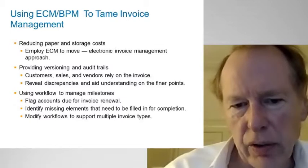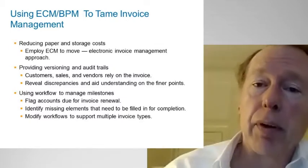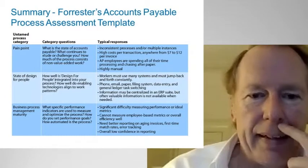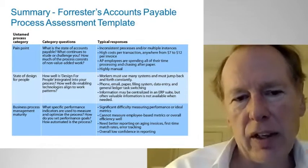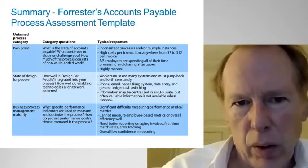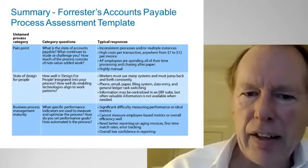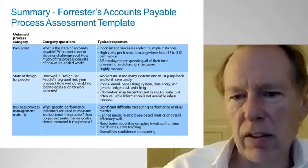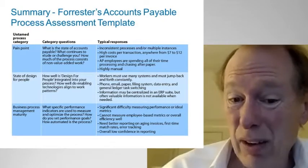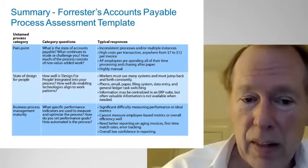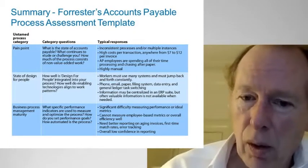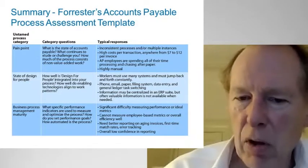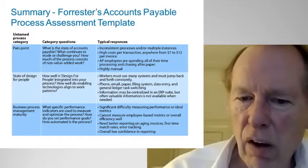Business process management and content management are important. Looking at cases — particularly for scenarios where a process wasn't approved automatically and was kicked to a human — there may be more complexity: a rogue purchase order, a three-way match or authorization required, or a significantly high amount. Those might be treated as cases where you track people, data, process, policies, and events. Content management and business process management are really important to tame invoice management — reducing paper costs, providing versioning and audit trails, and using workflow to manage milestones. There are still many companies that need help in this area.